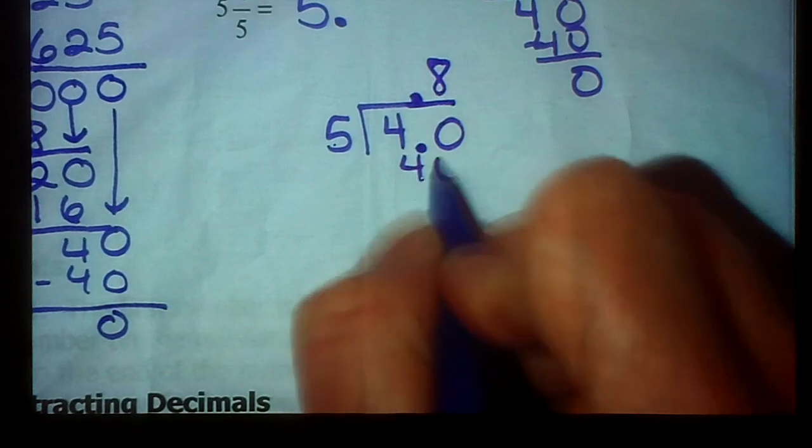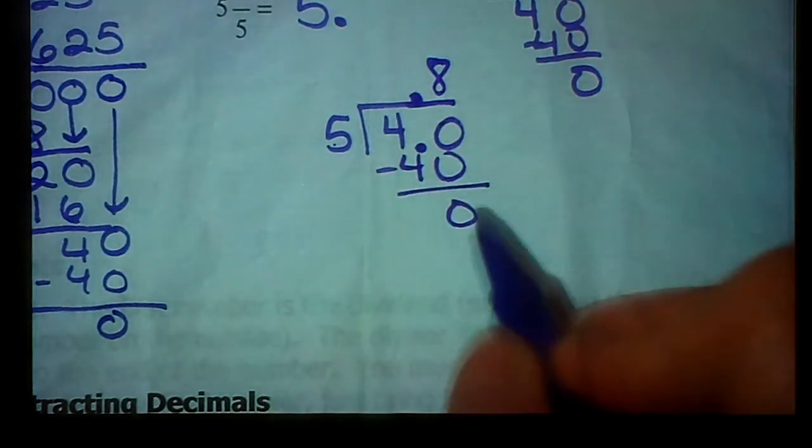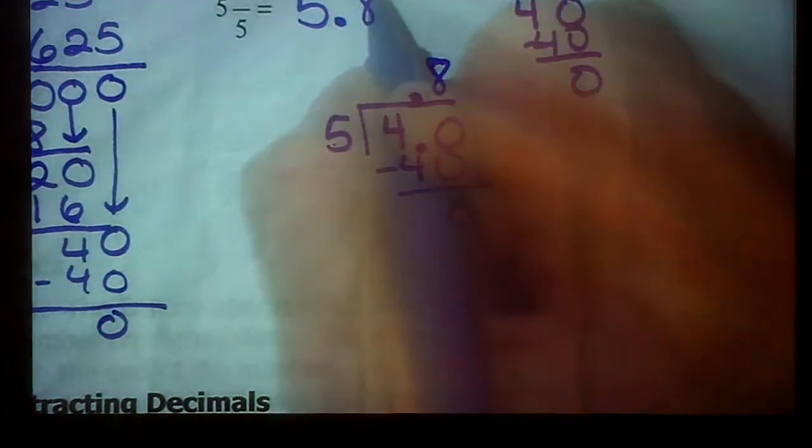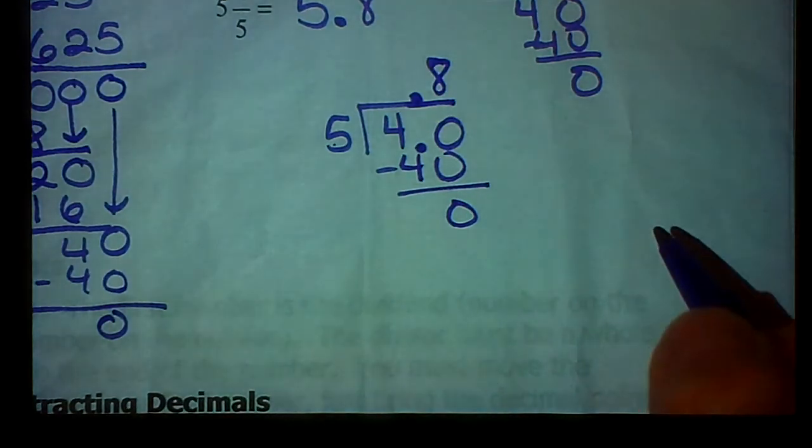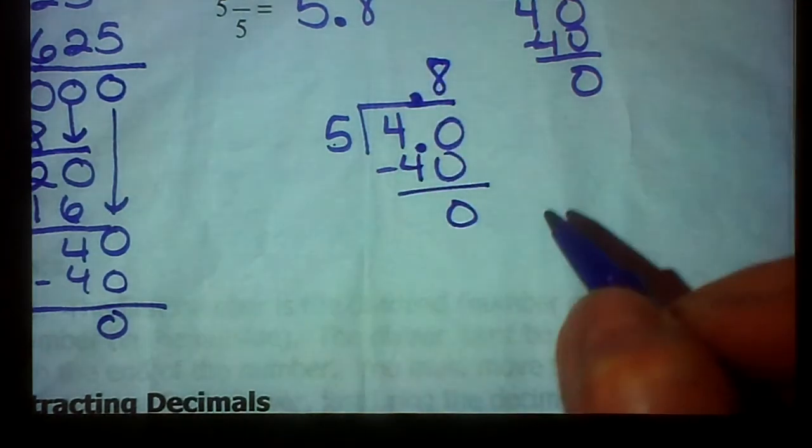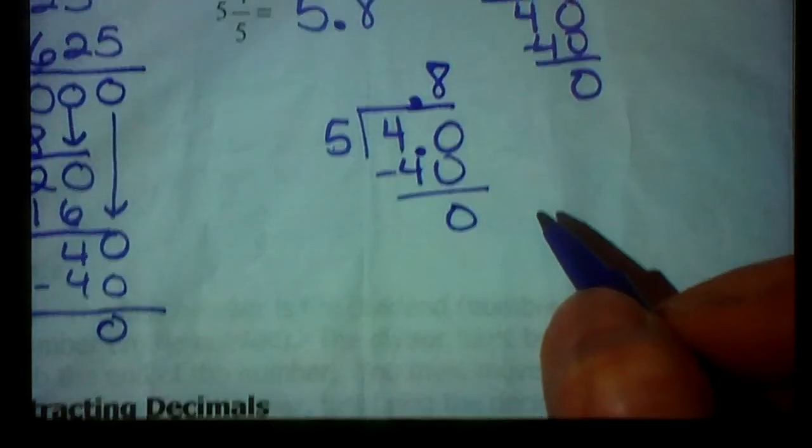5 goes into 40 eight times. 5 times 8 is 40. Ooh, I like this one. So we have a 0 remainder. We now have 5.8, or 5 and 8 tenths. Enjoy converting your fractions to decimals.